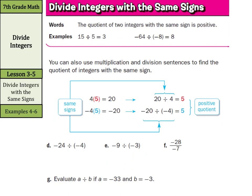What about when we have the same signs? Well, it's saying the quotient of two integers with the same sign is positive. We've done 15 divided by 5 for years, that's just 3. But what might be new for us is negative 64 divided by negative 8 is a positive 8. Probably the weirdest rule in math — why a negative divided by a negative is positive. A negative 24 divided by a negative 4 is a positive 6. A negative 9 divided by a negative 3 is a positive 3. And a negative 28 divided by a negative 7 is a positive 4, as a negative divided by a negative is always positive.